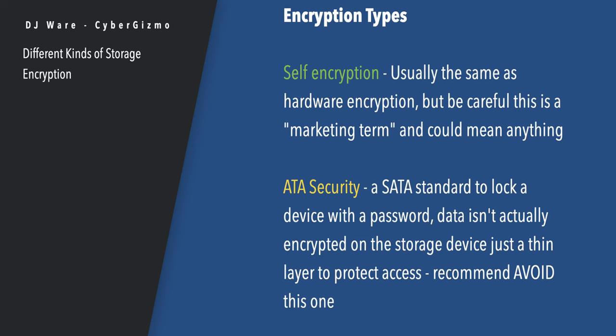If you encounter self-encryption claims, dig deeper — make sure it is a hardware-encrypted device if that's what you're looking for. Otherwise you may be taking CPU cycles to manage things on those devices. The last one I'll include just for completeness is ATA security, part of the SATA standard that's been around a long time. ATA security is nothing more than a password lock — it prevents you from mounting the drive until you give it a password. It doesn't do encryption or decryption; the device stores and retrieves data unencrypted. I'd recommend avoiding that one. Don't confuse it with LUKS — that's not how LUKS works.